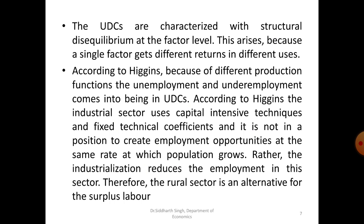Higgins also noted that in the beginning, it is possible to absorb additional labor from the industrial sector by bringing more land under cultivation, leading to an optimal combination of labor and capital. Eventually, with the passage of time, land becomes scarce. The ratio of labor to capital in the rural sector rises and techniques become increasingly labor intensive. Ultimately, all available land is cultivated using highly labor-intensive techniques and the marginal product of labor becomes zero and even negative. Thus, with population growth, disguised unemployment begins to appear, and farmers have no incentive either to invest more capital or to introduce labor-saving techniques.